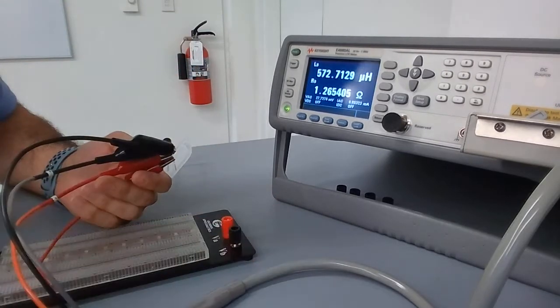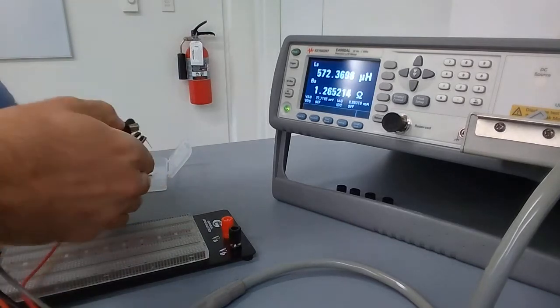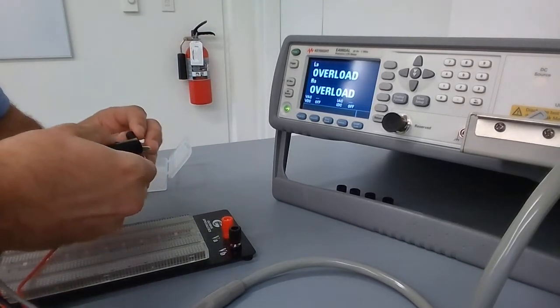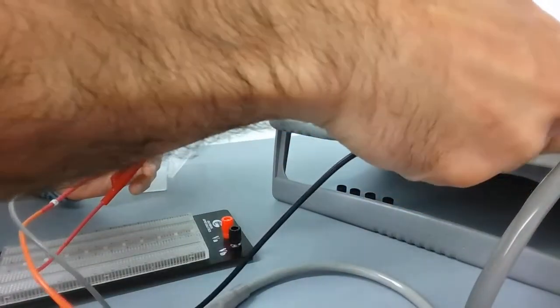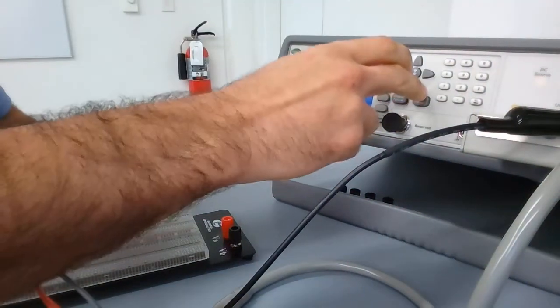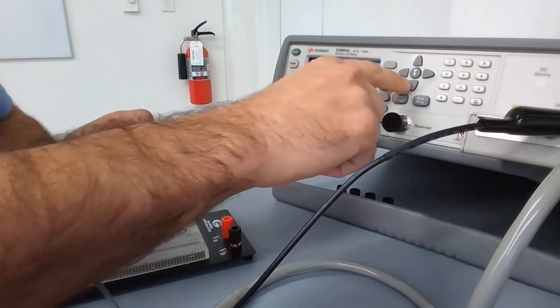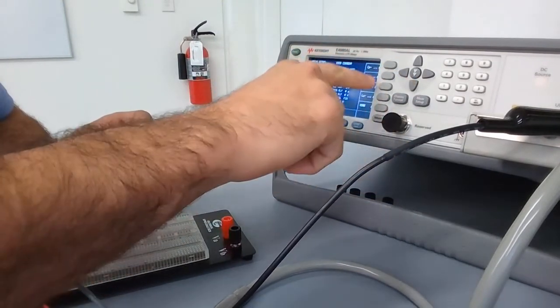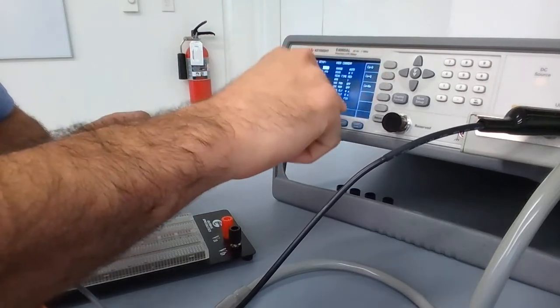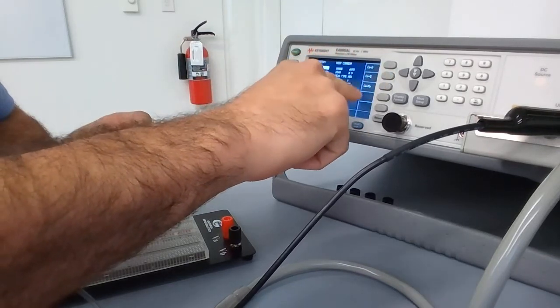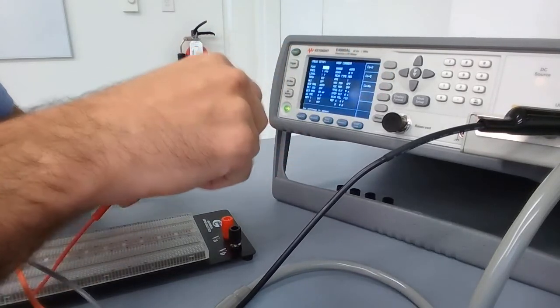That gives me the value for my inductor. If I want to measure the value of a capacitor, I'm gonna go to measurement setup and then I'm gonna go to my function. Here I can change it to series capacitance along with series resistance.